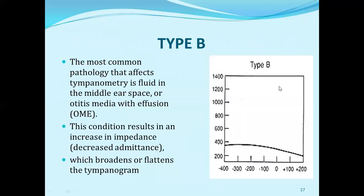In Type B, you are looking at compliance versus pressure, but there is no peak visible in the graph. This means the graph is problematic — there is a problem in your middle ear. There is fluid present, a condition known as otitis media. This condition increases your impedance and flattens the tympanogram.